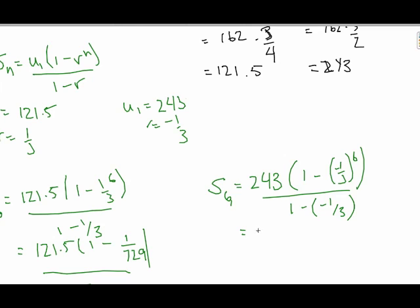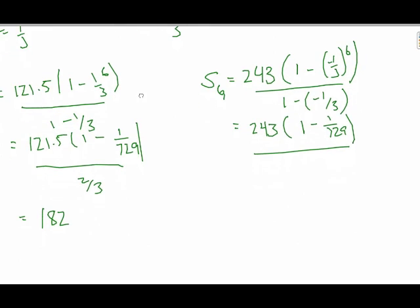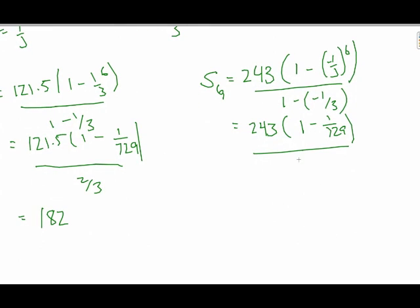That's going to be 243, and again, that's going to be 1 minus 1 over 729 over 4 thirds. And if I throw that into my calculator, I get 243 times... Again, I get 182. Either way, I get the same sum.